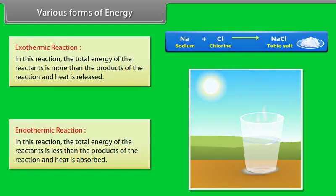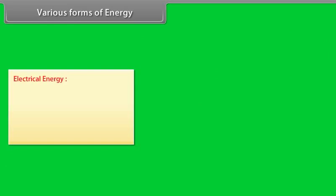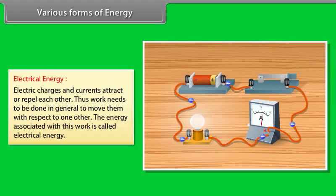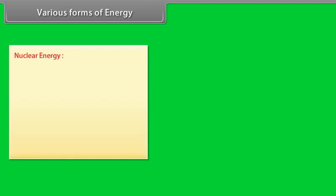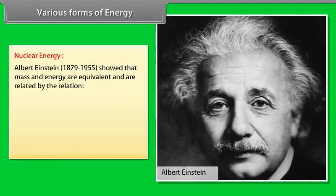Electrical energy: Electric charges and currents attract or repel each other. Thus work needs to be done in general to move them with respect to one another. The energy associated with this work is called electrical energy.